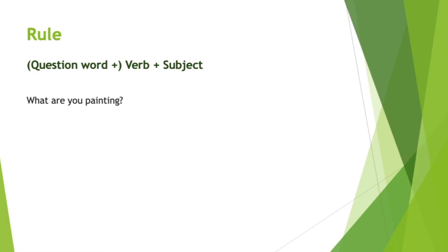Let's translate an example with a question word: 'What are you painting?' First the question word — 'what' is 'was.' Then the verb: 'to paint' is 'malen,' and conjugated for 'du' that becomes 'malst.' Then the subject, which is 'you' — 'du.' So: 'Was malst du?'